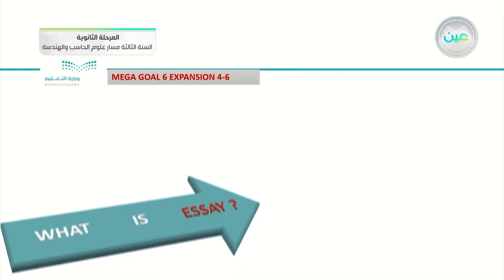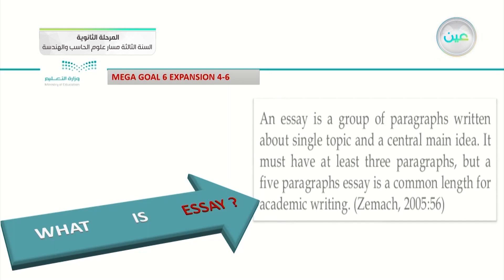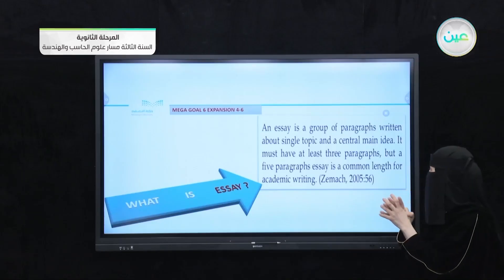On the next slide, we will talk about the essay as a whole, in general. What does an essay mean? An essay is a group of paragraphs written about a single topic and a central main idea. It must have at least three paragraphs. As we discussed before, the first one is introduction, the second is body, and the last one is conclusion. But a five-paragraph essay is a common length for academic writing. If you would like to write in an academic way, you should write your essay through five paragraphs — introduction, three body paragraphs in the middle, and conclusion.